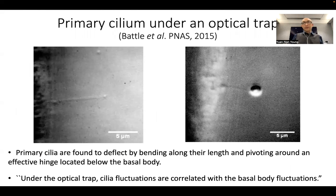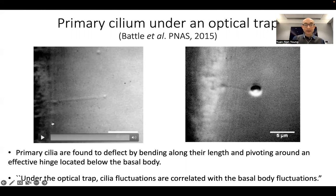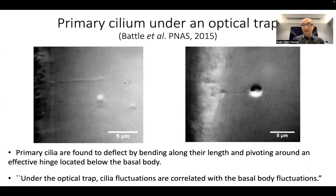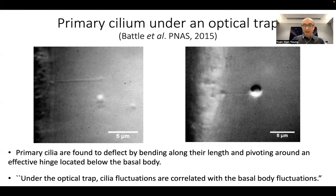What happens during that is that the whole cell is exposed to viscous stress imposed by the external fluid stimuli. Bato in 2015 used an optical trap to bend the primary cilium by trapping the cilium tip. This way, they could minimize stimulation of the rest of the cell and just look at how the cell responds to this bending due to the optical trap. They found that cilium fluctuations are correlated with basal body fluctuations.